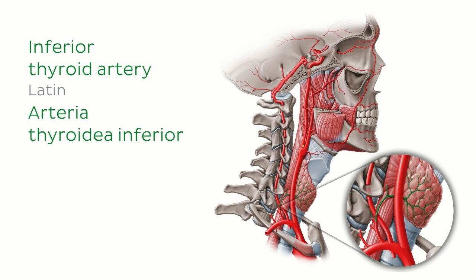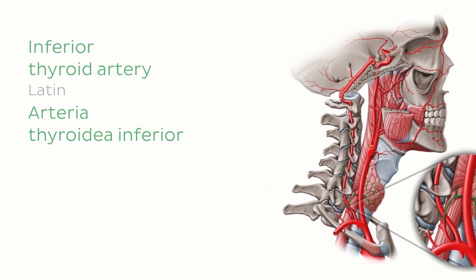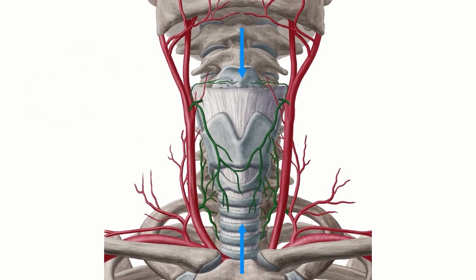It's important to note that the superior and inferior thyroid arteries anastomose with each other, both from the same and the opposite side.